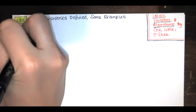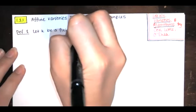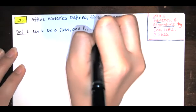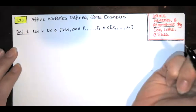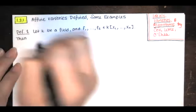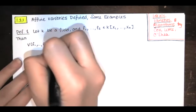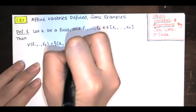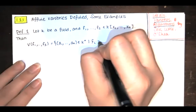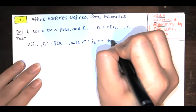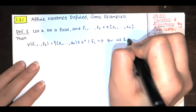Here's the definition. We let k be a field, and we let f sub 1 through f sub s be polynomials in n variables x sub 1 through x sub n with coefficients in the field k. Then the set V, denoted V of f sub 1 through f sub s, is the set of all n-tuples in n-dimensional affine space such that f sub i equals 0 for all i between 1 and s.